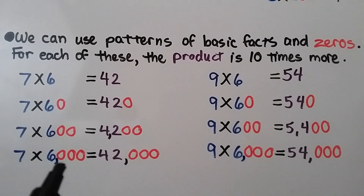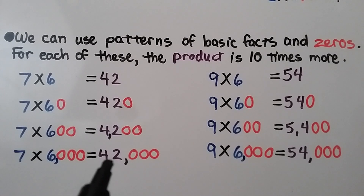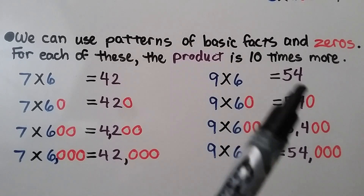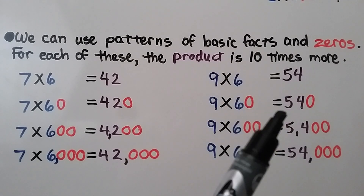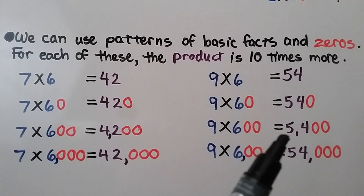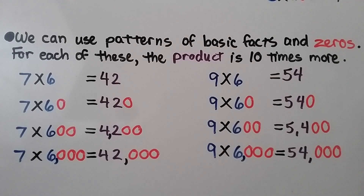For 7 times 6,000, we have three zeros in the factors, so we have 42 with three zeros: 42,000. Same with 9 times 6, which equals 54. So 9 times 60 equals 540, 9 times 600 equals 5,400, and 9 times 6,000 equals 54,000. The number of zeros in the factors is how many zeros will be in the product.